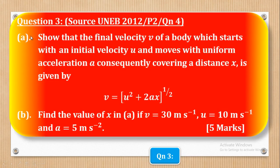Now we go to question three, which came from UNEB 2012, paper two, question four, part A. It says: show that the final velocity V of a body which starts with initial velocity U and moves with uniform acceleration A, covering a distance X, is given by V = (U² + 2AX)^(1/2). Note that the power of one-half is the same as a square root.